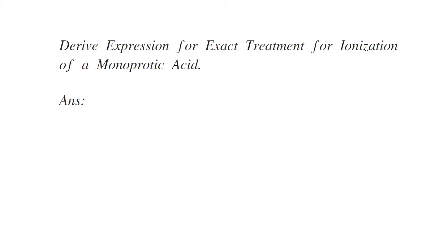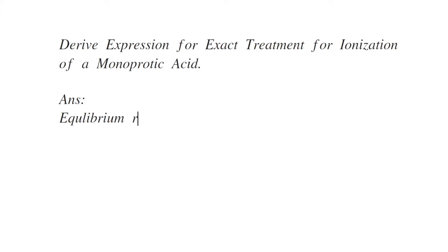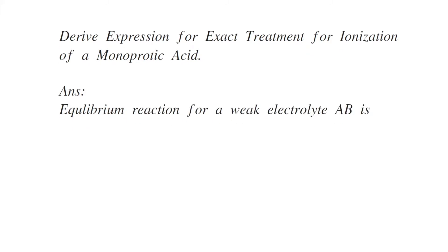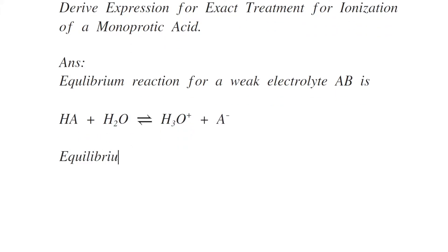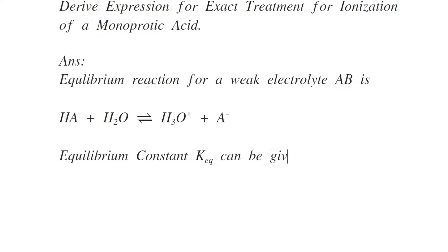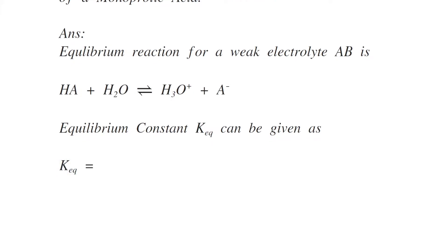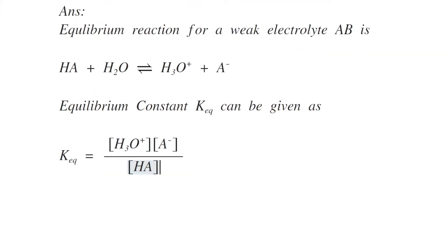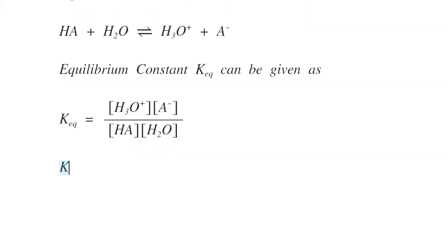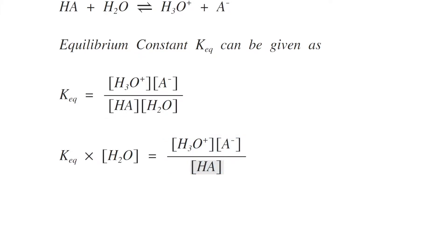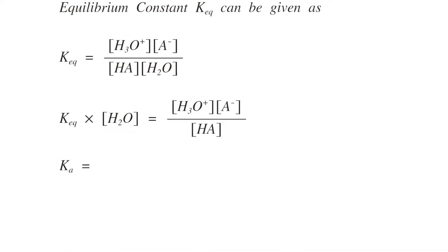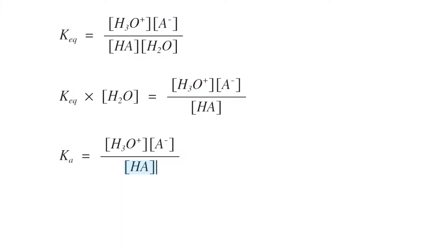We derive an expression for exact treatment of ionization of a monoprotic acid. The equilibrium reaction for a weak acid HA can be given as: HA reacts with water H₂O giving hydronium ion H₃O⁺ and A⁻ ions. The equilibrium constant Ka is given by [H₃O⁺][A⁻] / [HA], since the concentration of water is constant. This is equation number one.